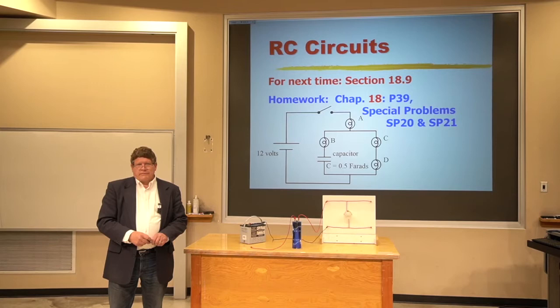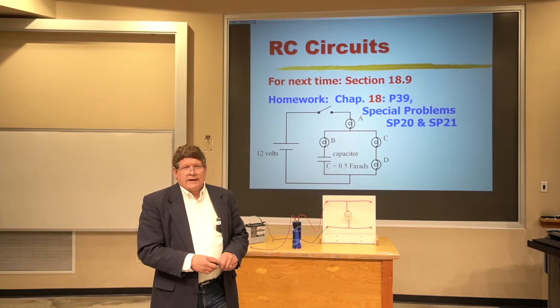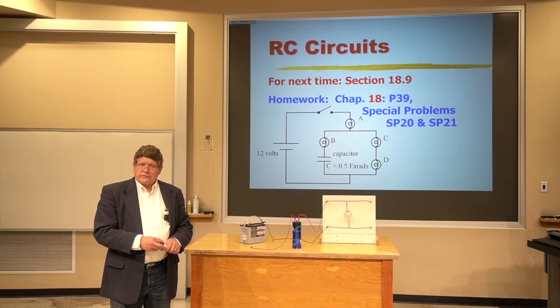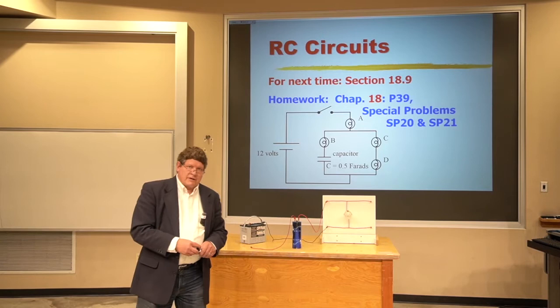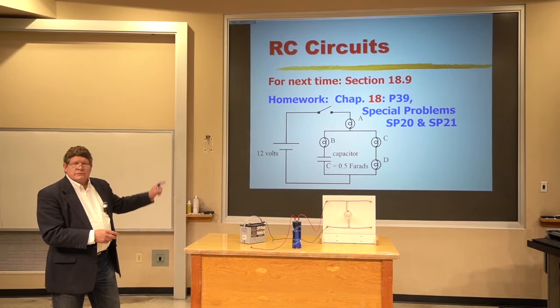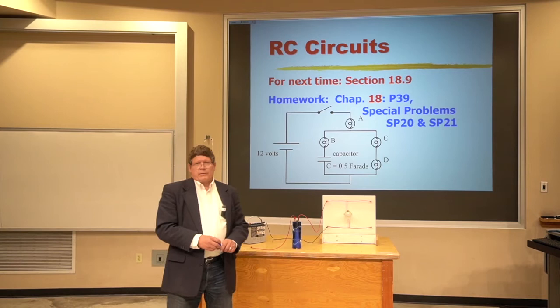Analog circuits are made up of very few elements. We've got resistors like bulbs, we've got batteries, we've got switches, and we also have capacitors that we can put in circuits. Later in the semester we'll find that we can add an inductor. Today we'd like to talk about what happens when we put a capacitor in our circuit.